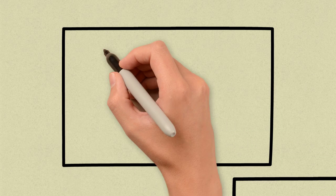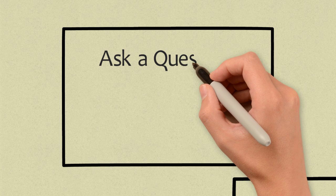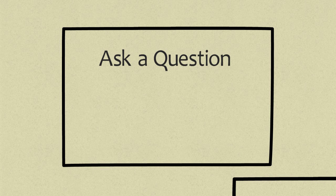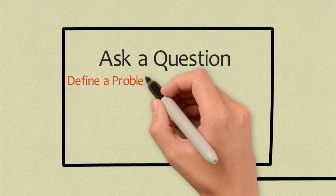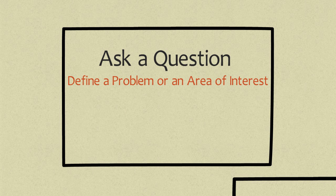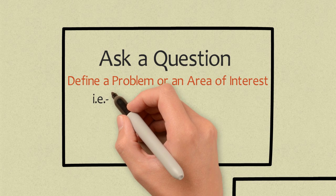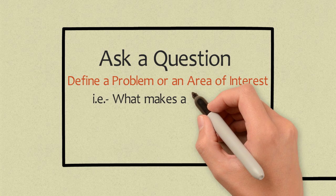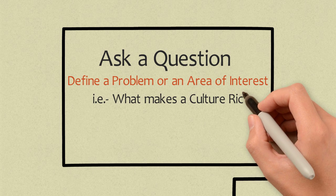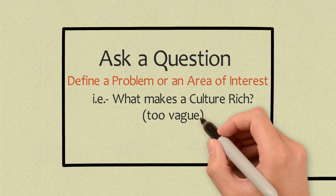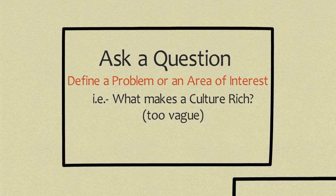The first step in the scientific method is to ask a question. Really, you can either ask a question, define a problem, or define an area of interest. Being very specific and narrow is important in this step. Asking a question such as what makes a culture rich is too vague because the word rich can be defined in a number of different ways.